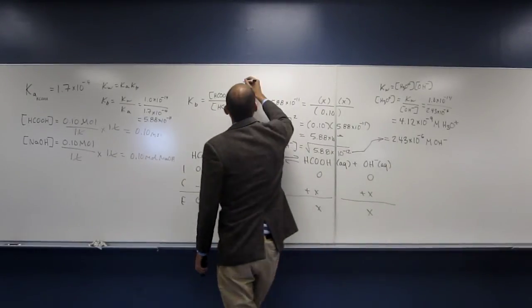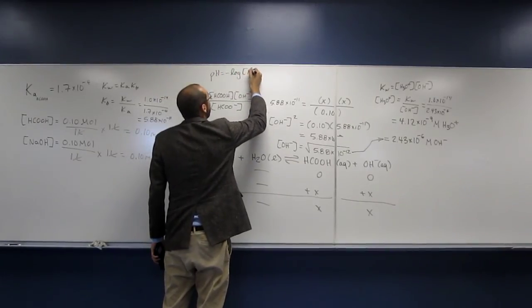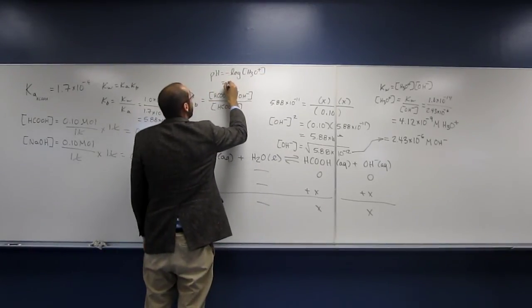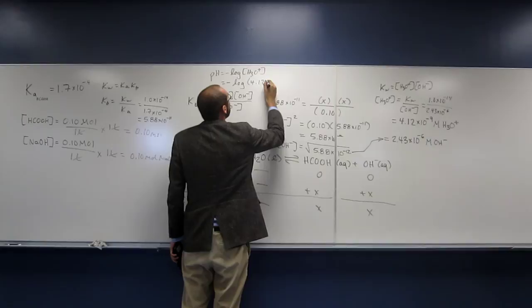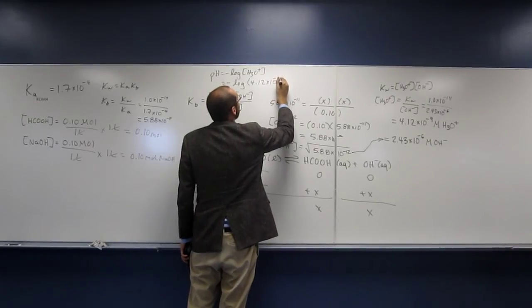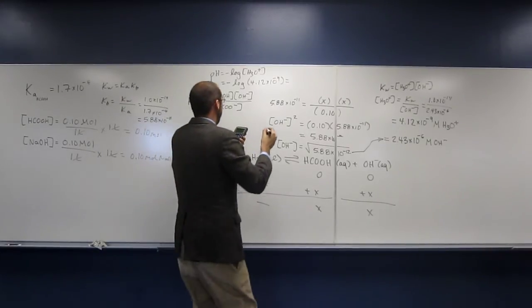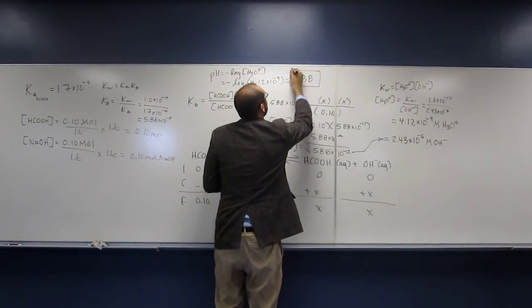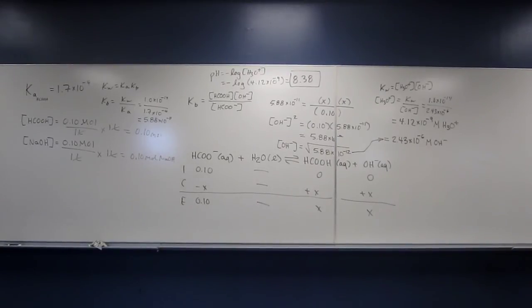So pH, here I'll just do it up here. pH, remember, is the negative log of the H3O plus concentration, right? So the negative log of 4.12 times 10 to the negative 9th, that's going to be 8.38. So that's carrying all your digits the whole time. So that's the pH of this solution. Are there any questions on that one?